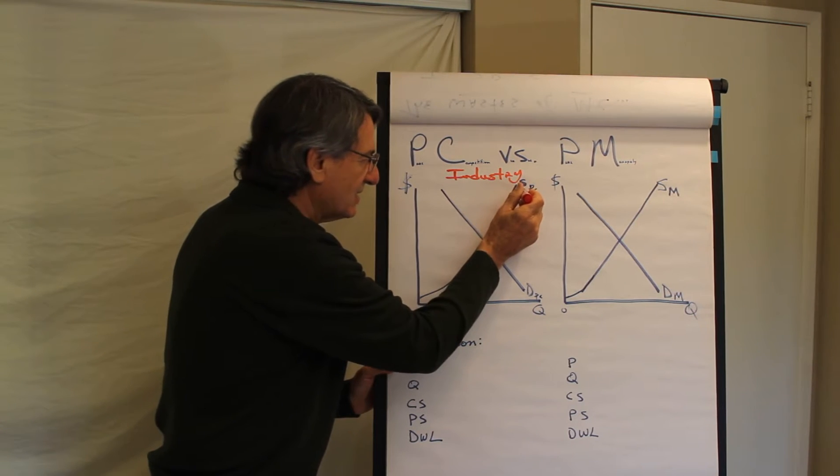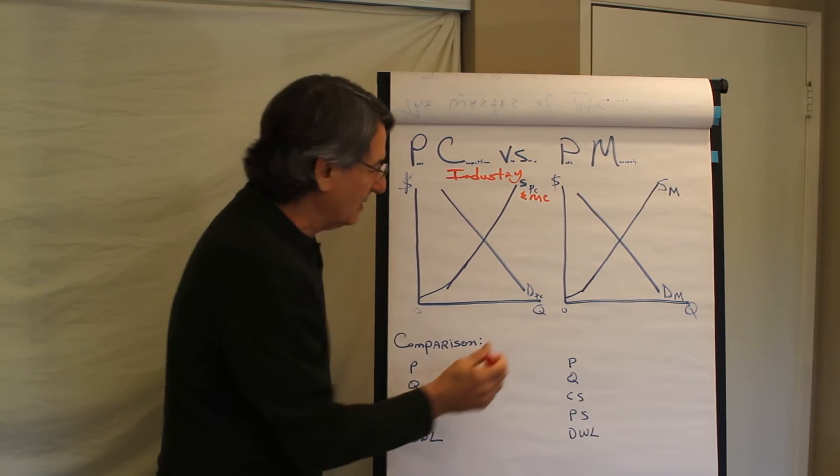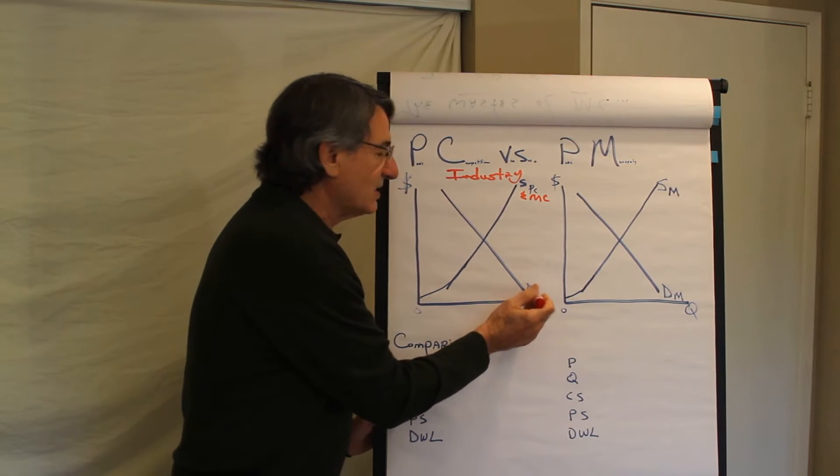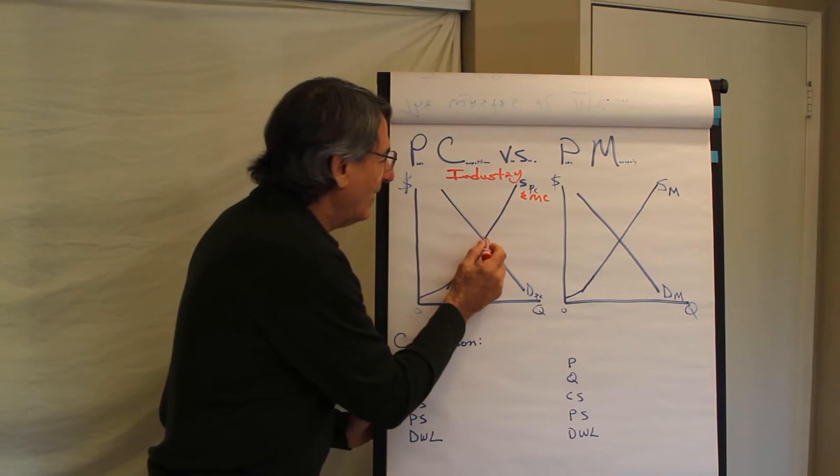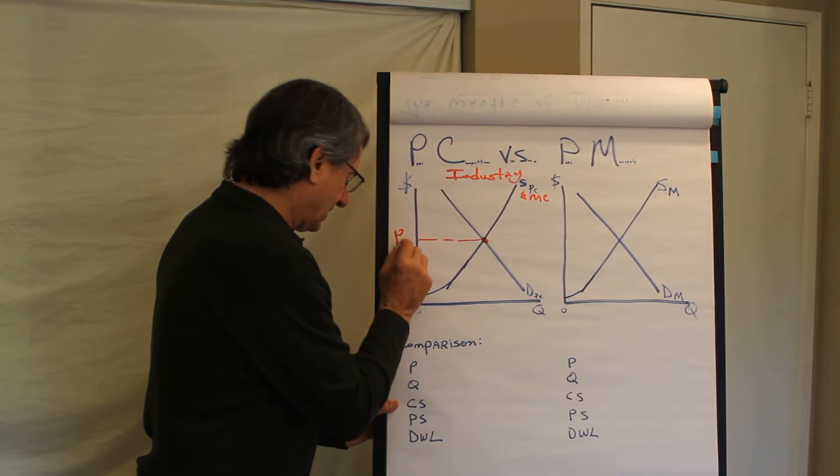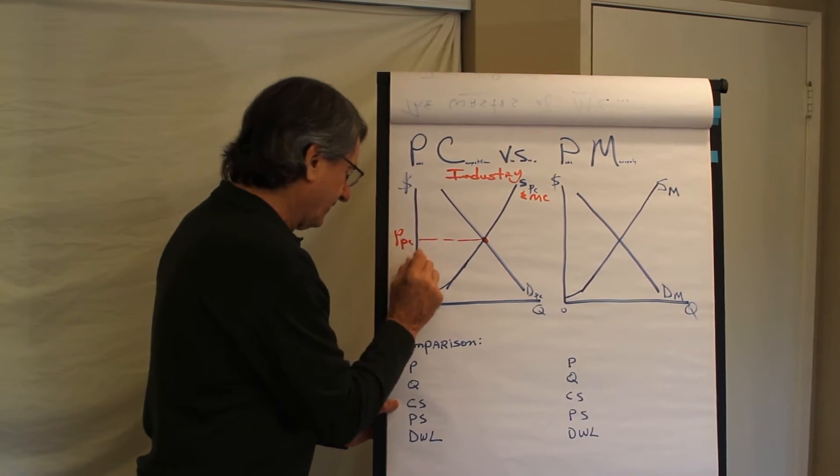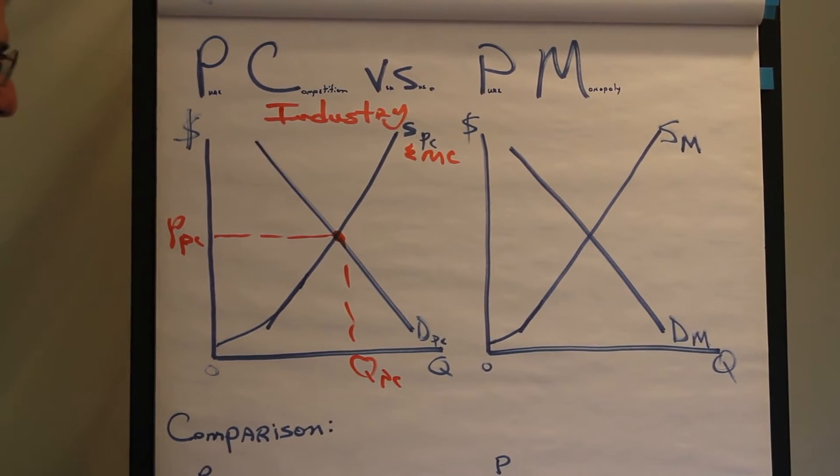This supply curve is the sum of the marginal cost curves for each firm in the industry. And this demand curve is the demand for all consumers or buyers in this industry. And out of this market process comes price, this price, PC we'll call it, and this quantity, QPC for pure competition.